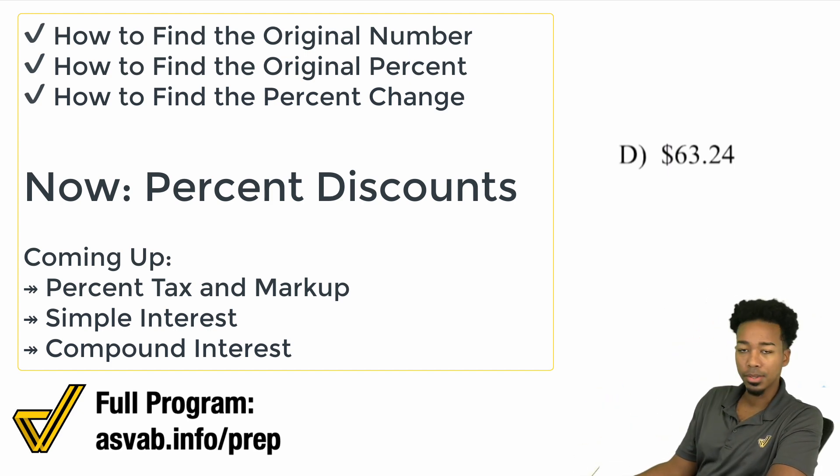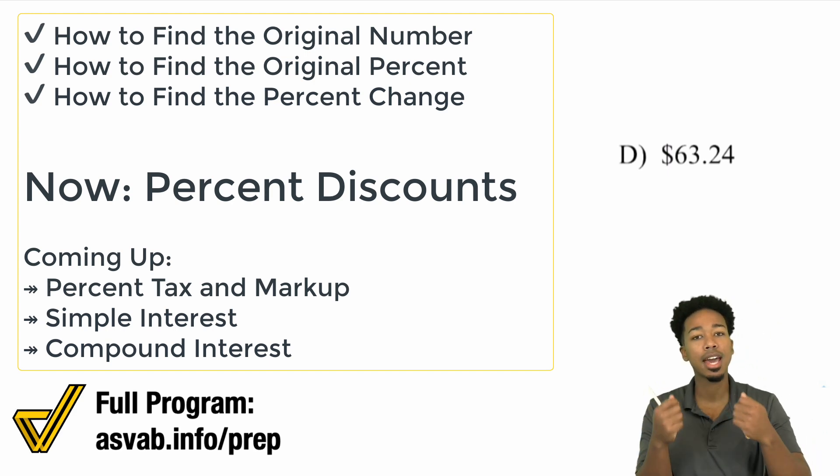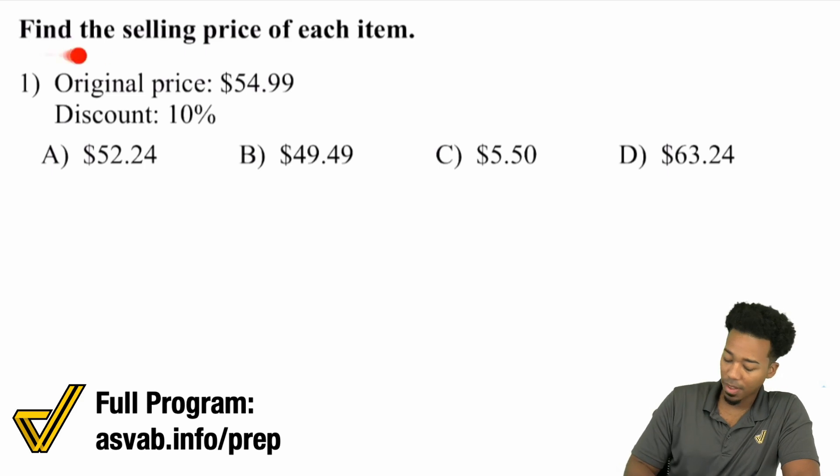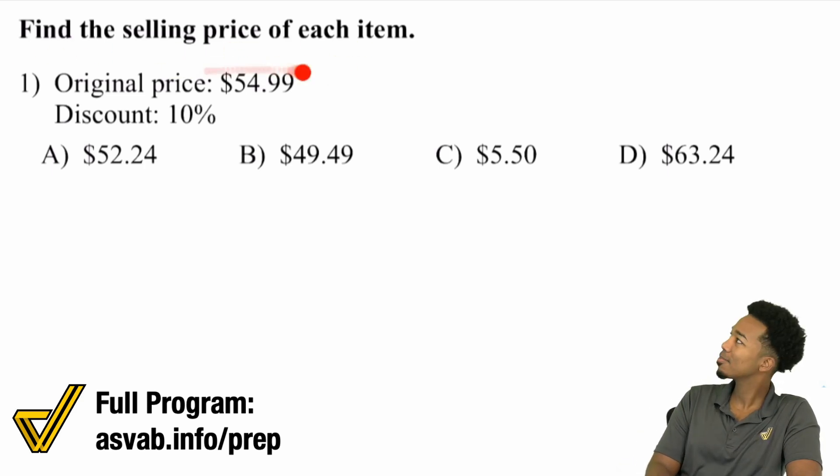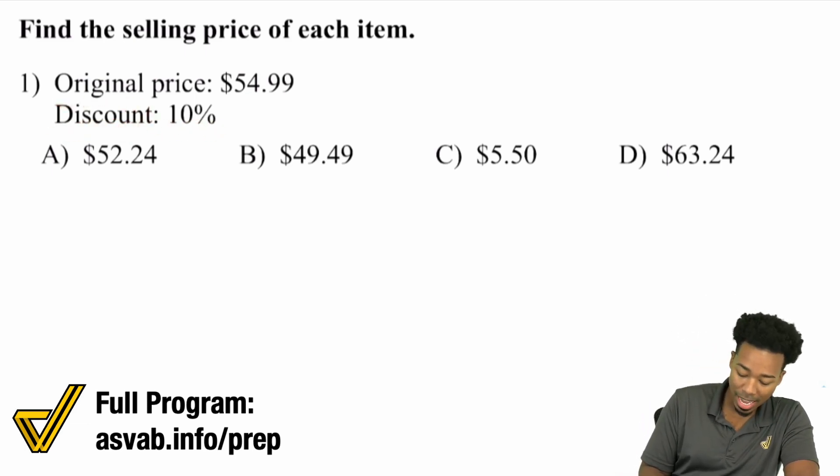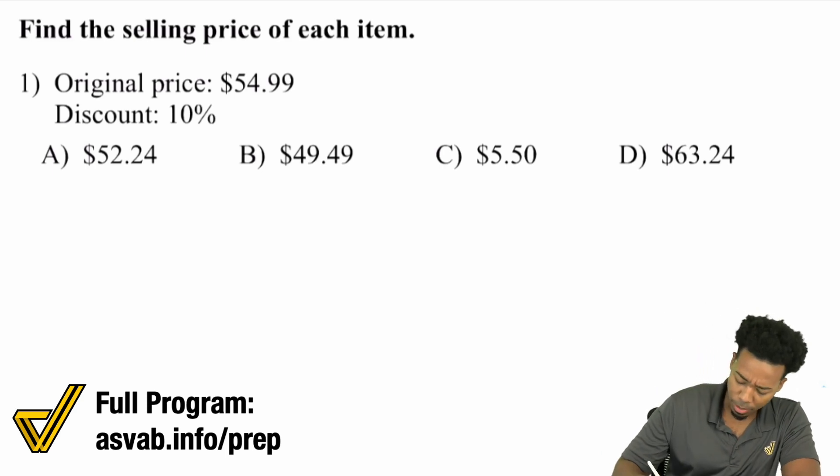When it comes to percent discounts, there are always two ways to handle tax and discount problems. I'm going to show you how convenient this is and help you avoid a big mistake many people make. The directions are: find the selling price of each item. Here the original price is $54.99 and the discount is 10%. A discount of 10% means you're going down by 10%. There are two main ways to solve this.